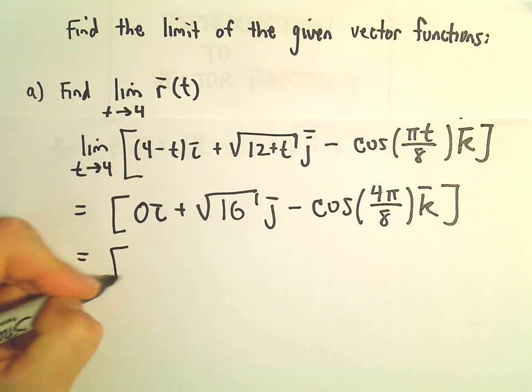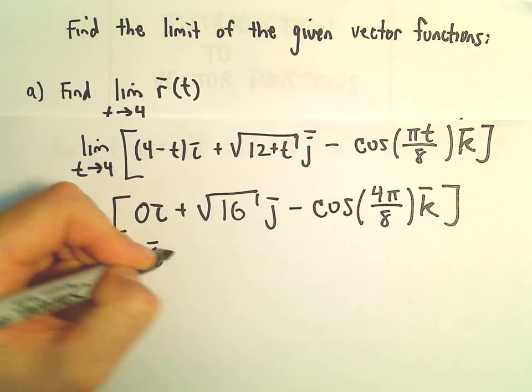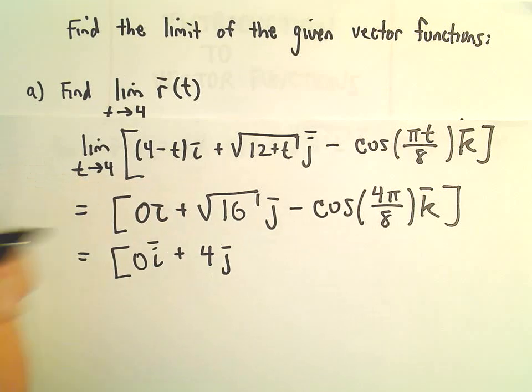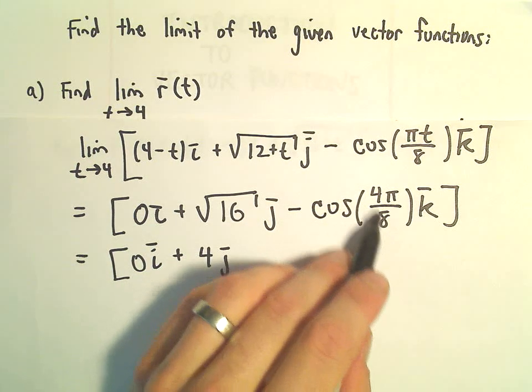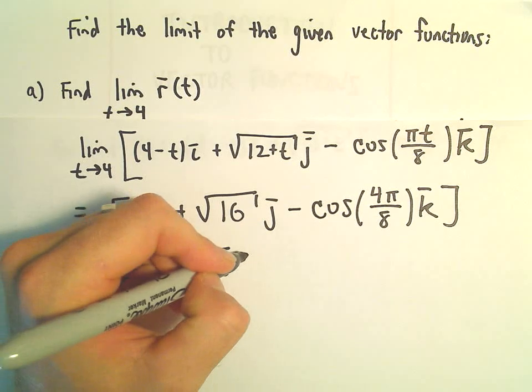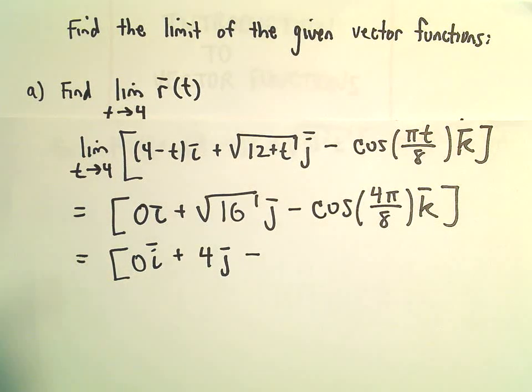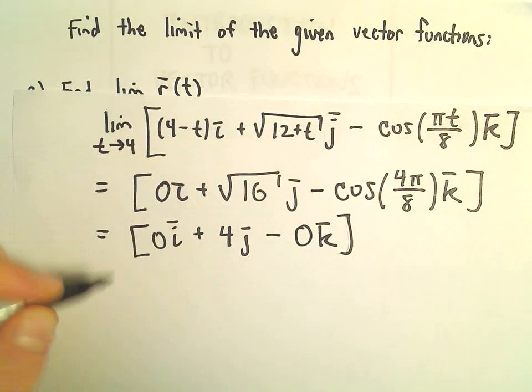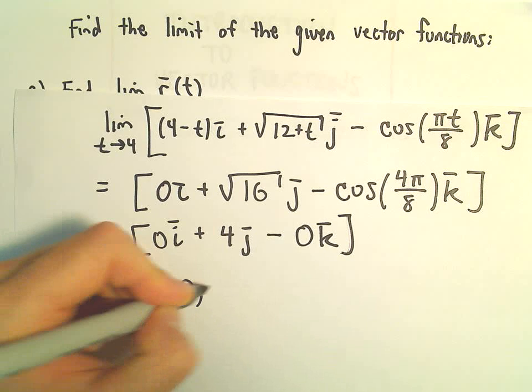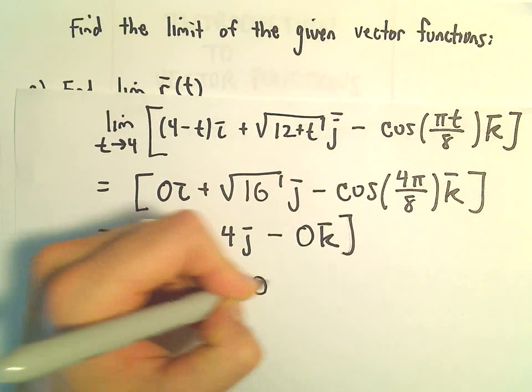But if we simplify this, this is just going to be 0i plus 4 times j. Let's see, this is going to be cosine of pi over 2 when we simplify. Cosine of pi over 2 is going to give us 0. So 0k, so really, we could rewrite this as 0, 4, 0.